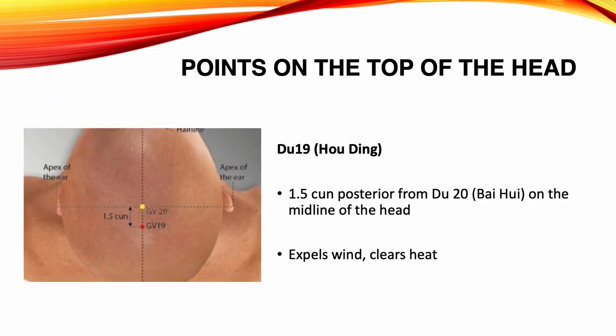Du 19, Holding. Location: 1.5 Sun posterior from Du 20, on the midline of the head. Functions: expels wind, clears heat. Indications: migraines, dizziness, common cold, insomnia, seizures, hysteria.